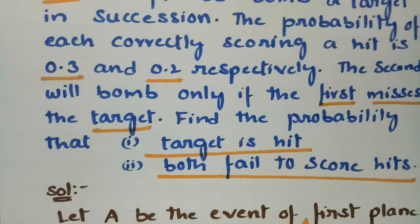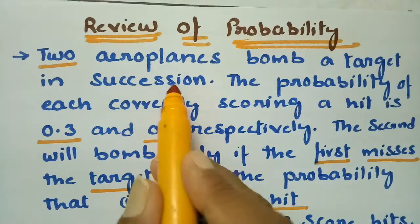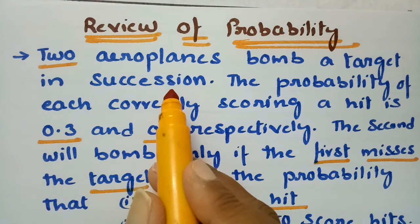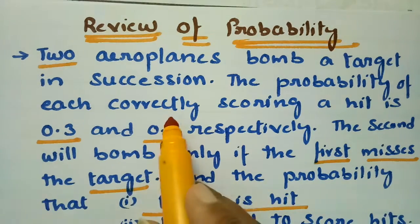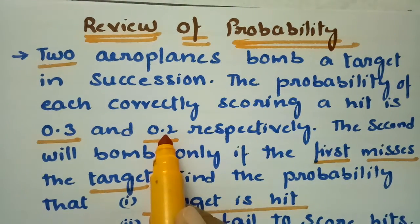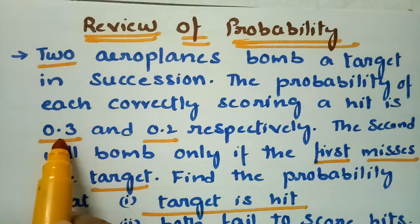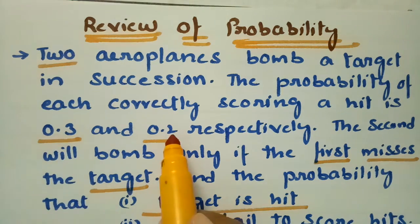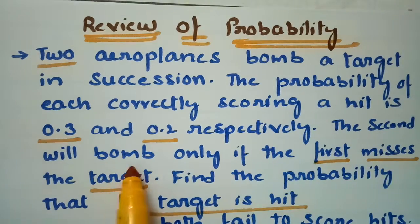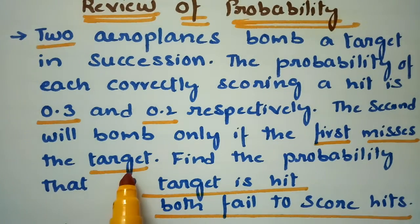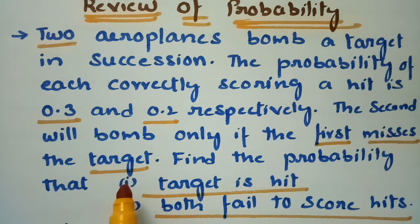To recap: two planes bomb a target in succession. If the first one fails, the second will plunge into action. The probability of correctly scoring a hit is 0.3 for plane A and 0.2 for plane B. The second bombs only if the first misses — both do not hit the target simultaneously.